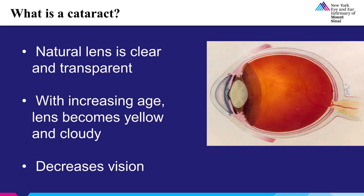What is a cataract? We all have a natural lens inside of our eye which helps us focus at both distance and near. When we are young, this lens is clear or transparent. With increasing age, the lens becomes yellow or cloudy, as we can see in this cross-sectional diagram of the eye. When the natural lens becomes too cloudy or opacified, this is called a cataract and may lead to decreased vision.